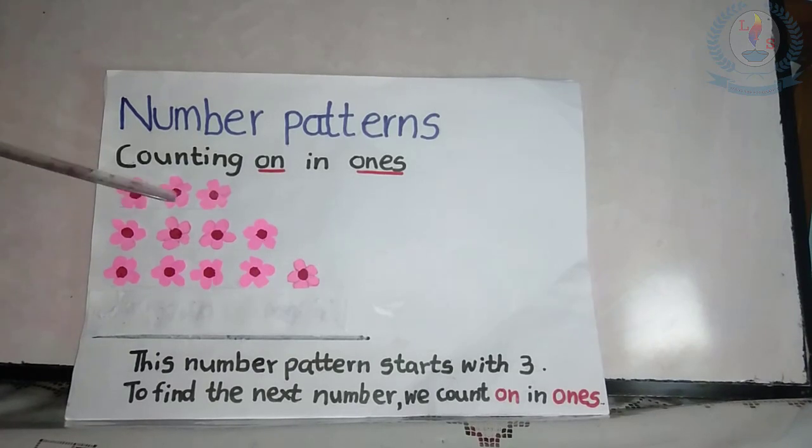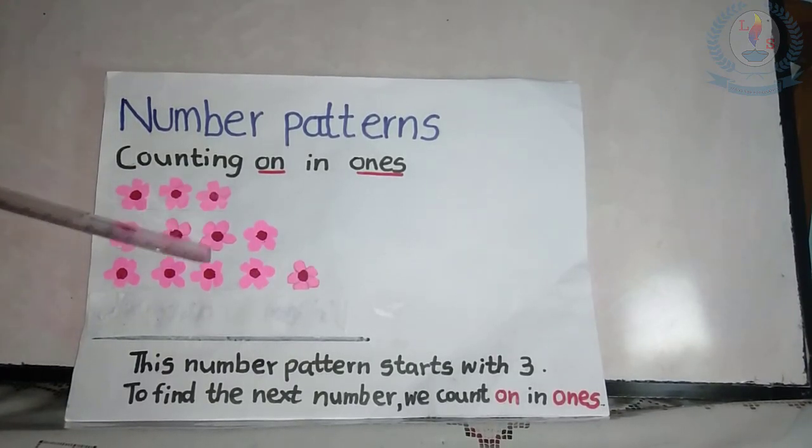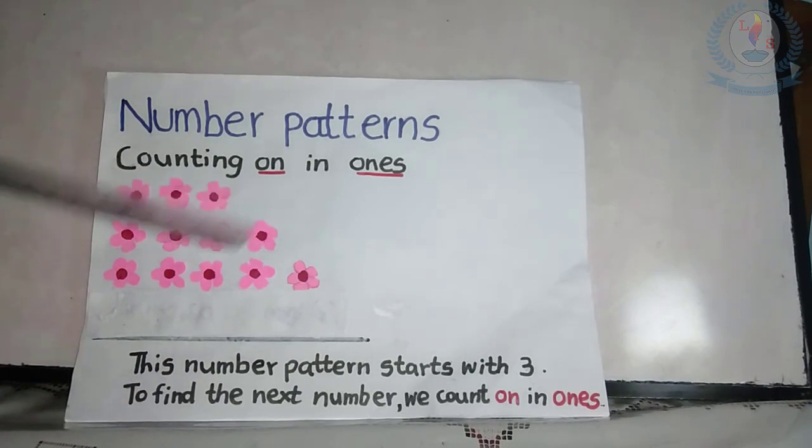The first row: 1, 2, 3. The second row: 1, 2, 3, 4.